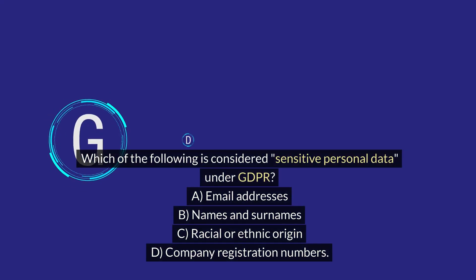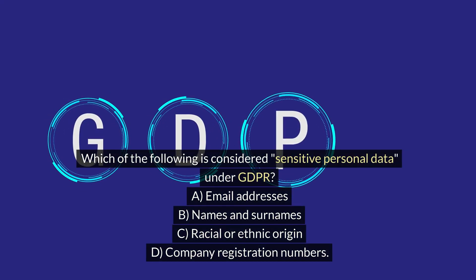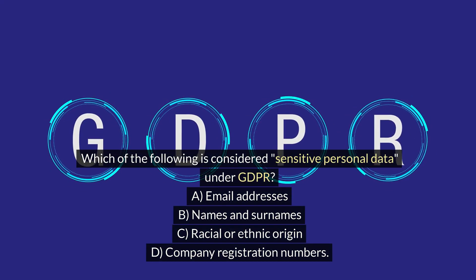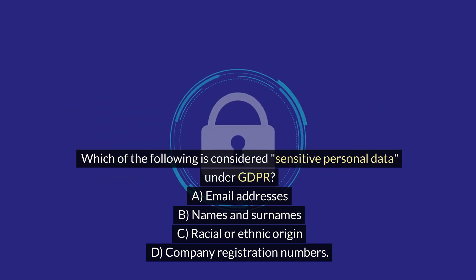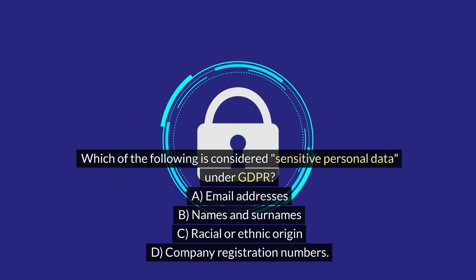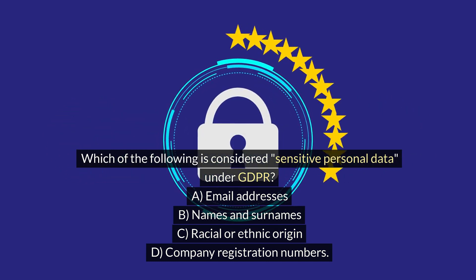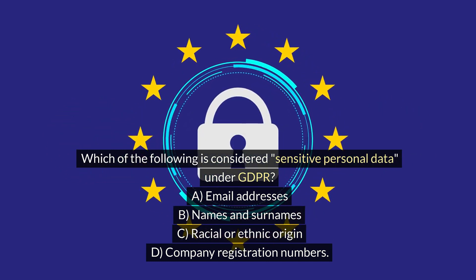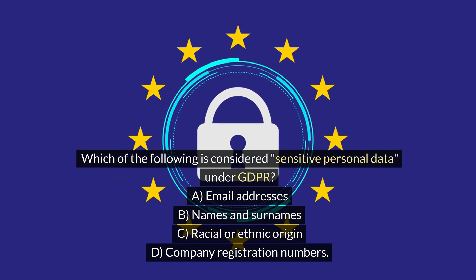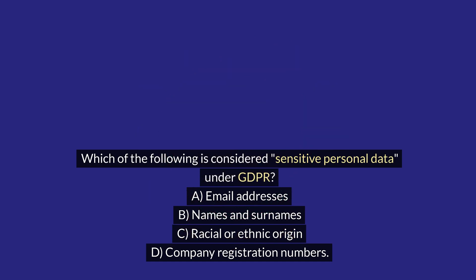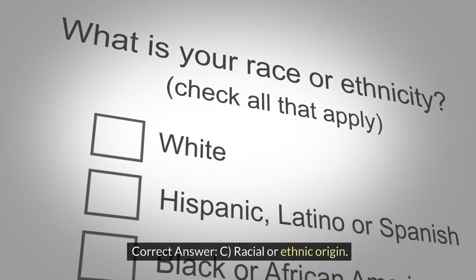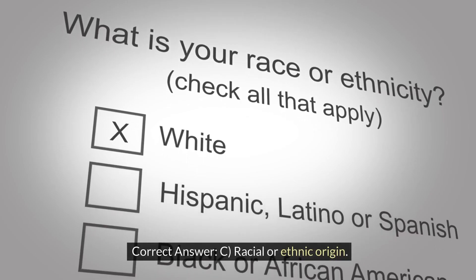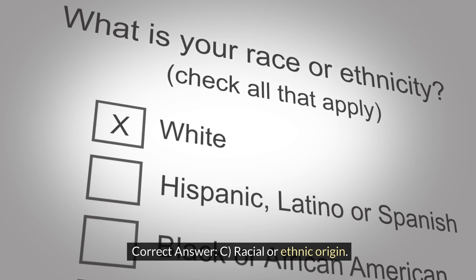Which of the following is considered sensitive personal data under GDPR? A. Email addresses. B. Names and surnames. C. Racial or ethnic origin. D. Company registration numbers. Correct answer: C. Racial or ethnic origin.